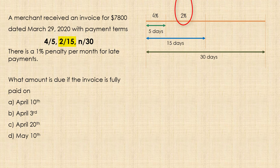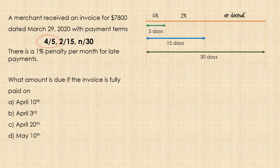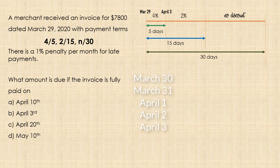The 2% will apply after 5 days, but no later than 15 days. And there is no discount after 15 days. The invoice date is March 29. For the 4% discount that applies within the first 5 days, note that we start counting from the day after the invoice date, and since March has 31 days, the 5 days will be March 30th, March 31st, April 1st, 2nd, and 3rd. Thus, the last day to take the 4% discount is April 3rd.